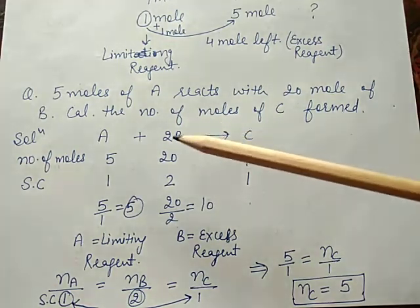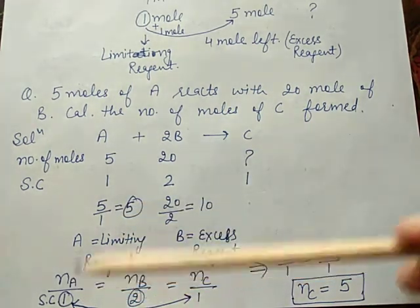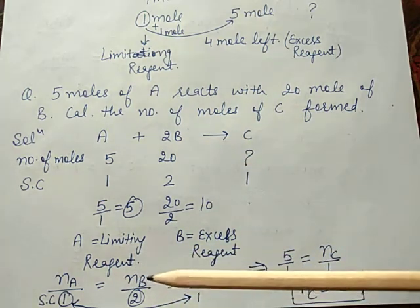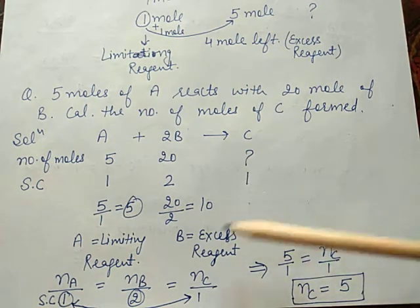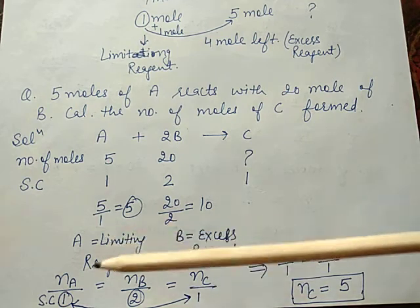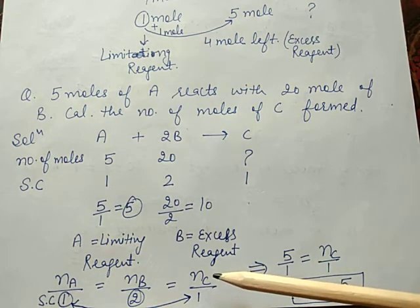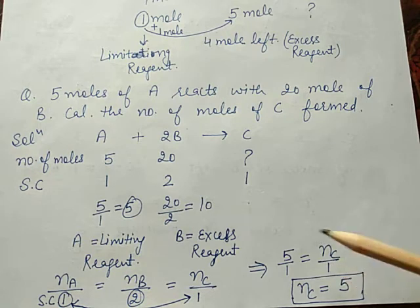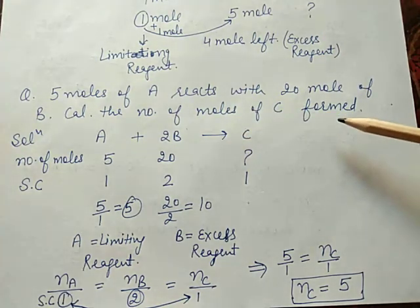Now how do we calculate the number of moles of C formed? Using the ratio equation: N_A divided by stoichiometric coefficient 1 equals N_C divided by stoichiometric coefficient 1. Substituting: 5 divided by 1 equals N_C divided by 1. After cross multiplication, N_C equals 5. It means 5 moles of C are formed during the reaction.